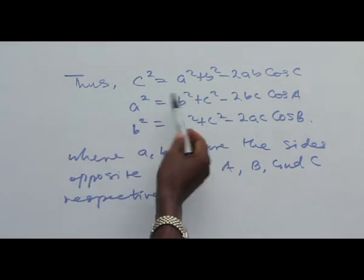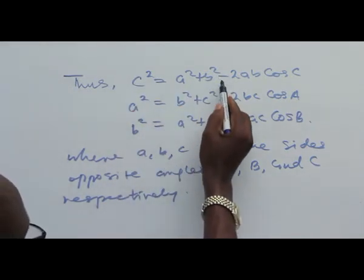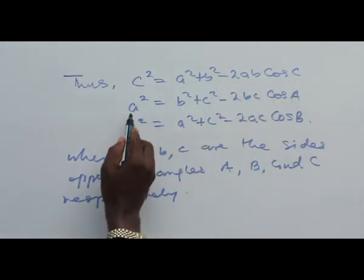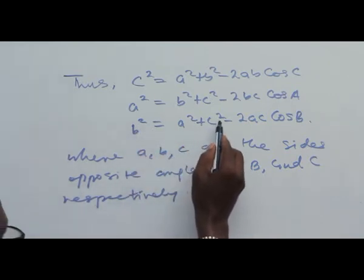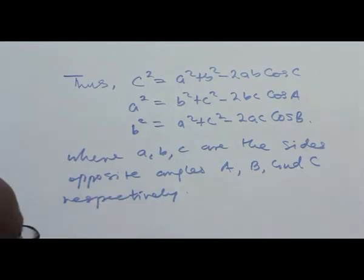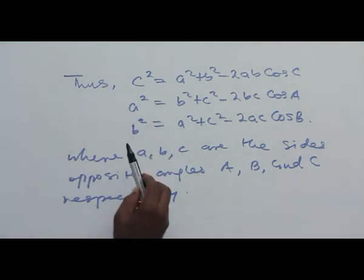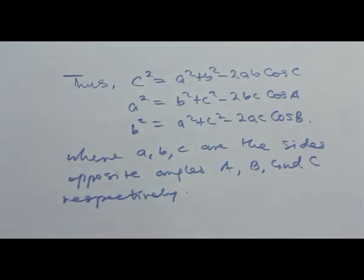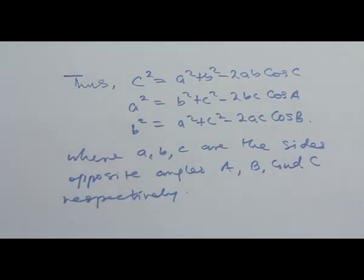We also use the cosine rule to calculate an unknown side. For side c: c² = a² + b² − 2ab·cos C. Similarly, a² = b² + c² − 2bc·cos A, and b² = a² + c² − 2ac·cos B, where a, b, c are the sides opposite angles A, B, and C respectively. Making the appropriate side the subject of the angle formula gives the same result.